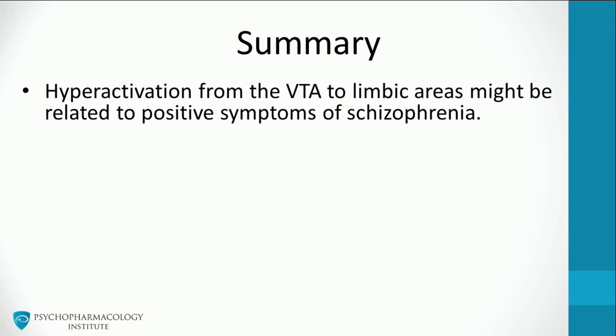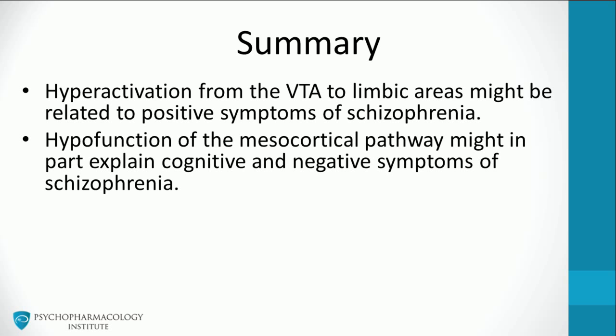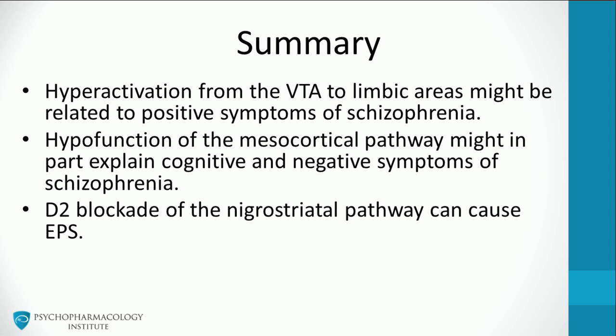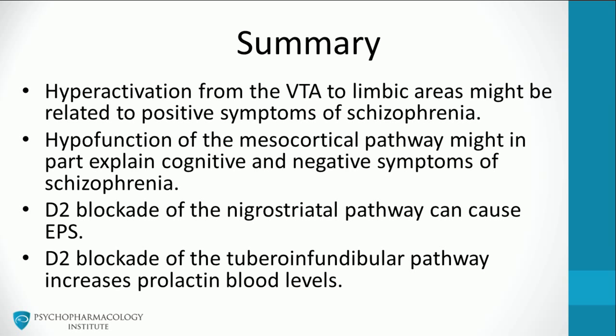In summary: hyperactivation from the ventral tegmental area to limbic areas might be related to positive symptoms of schizophrenia. Hypofunction of the mesocortical pathway might in part explain cognitive and negative symptoms of schizophrenia. D2 blockade of the nigrostriatal pathway can cause extrapyramidal symptoms. And D2 blockade of the tuberoinfundibular pathway increases prolactin blood levels.